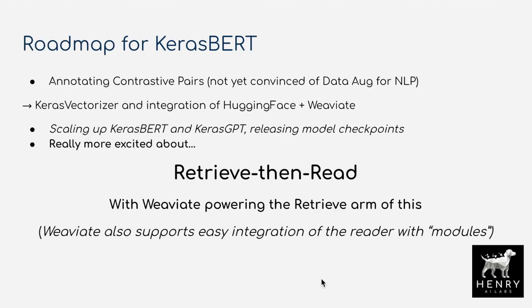I was really excited to tell Eddie about some of the roadmap ideas I have for Keras BERT. The first is annotating contrastive pairs. We have the Keras Vectorizer, which is useful for this vector search engine — we want to form vector representations of code snippets and chunks of code within these Keras code examples so we can do semantic search between natural language and code, or you can paste in code you're trying to implement, like a custom tf.gradients or gradient tape, and find a similar example in the Keras code examples.